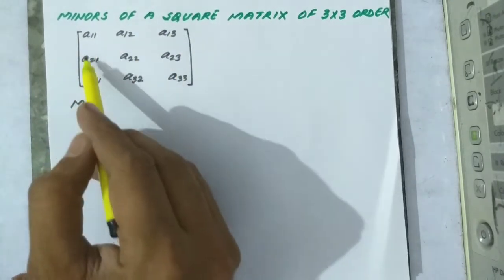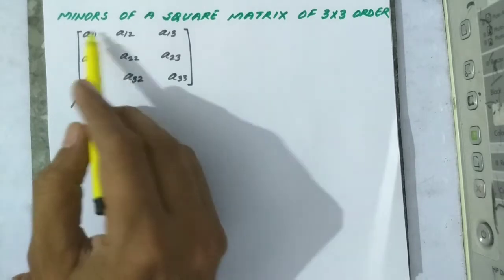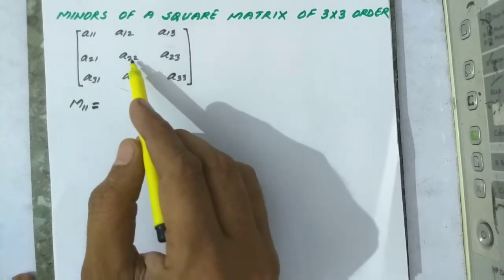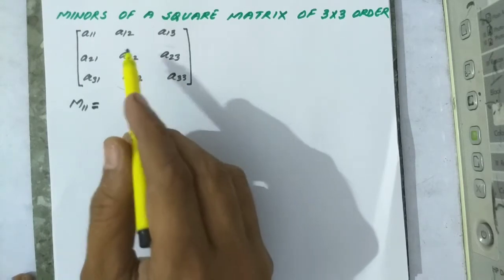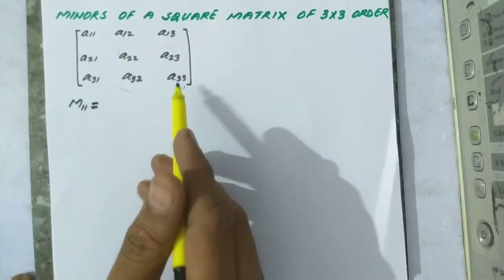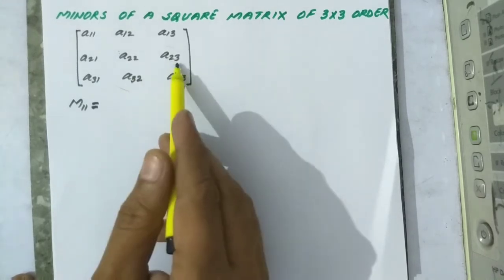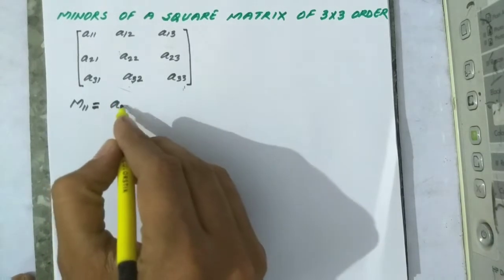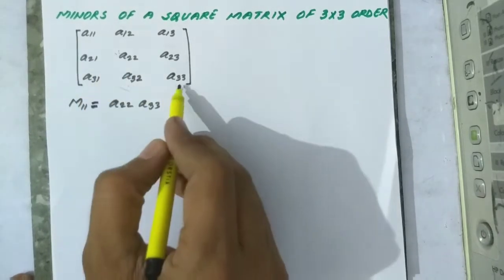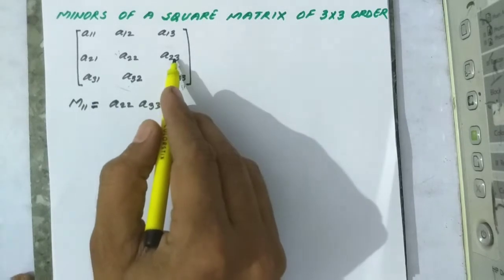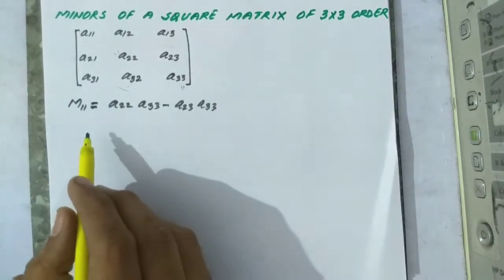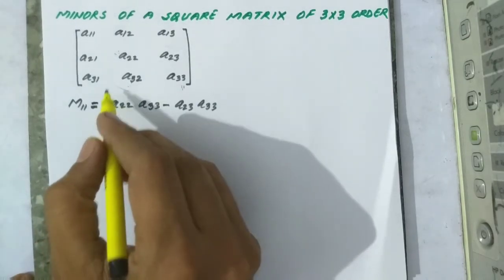This row and this column are vanished, so these four elements are left. We take the difference of the cross multiplication: the first product from top-left to bottom-right gives a22·a33, and minus the top-right to bottom-left gives a23·a32. So this is the minor of element a11.